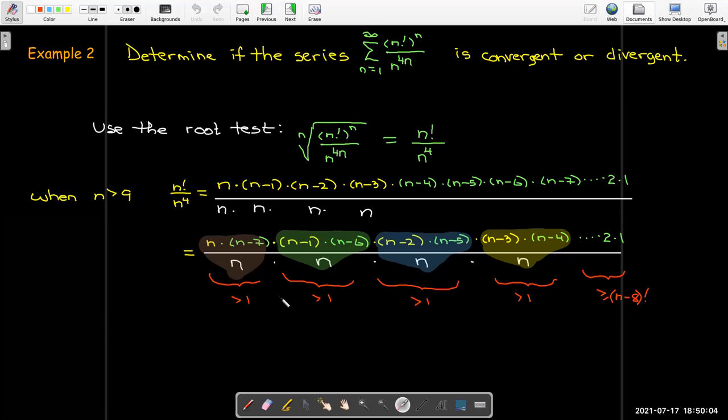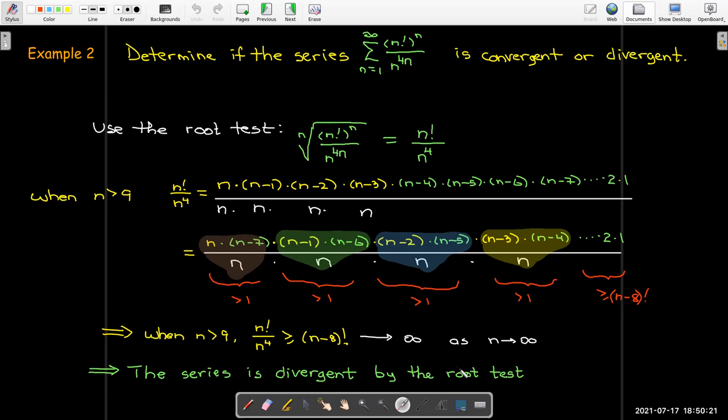And so when n is greater than 9, I come up with the n factorial over n to the power of 4 is greater than or equal to n minus 8 factorial. And of course, that's going to go to infinity as n goes to infinity. So this series is divergent by the root test.